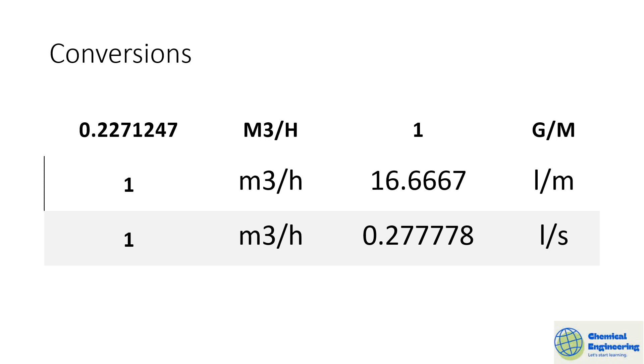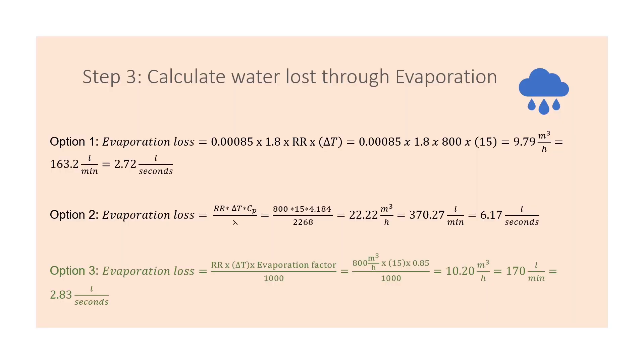There's various equations that you can use here. The first equation, let's look at it. It has a factor of 0.0085 multiplied by 1.8 and the circulation rate. Our circulation rate here we can estimate it to be 800 multiplied by the temperature difference. Punch everything into your calculator and you get your answer in form of meter cubed per hour. You can also get it in the form of liters per min or 2.72 liters per second.